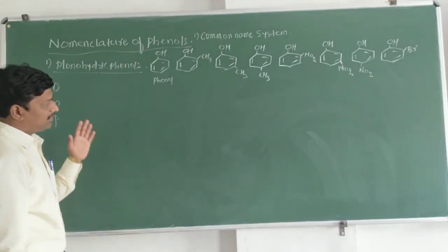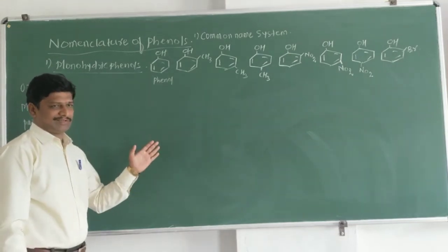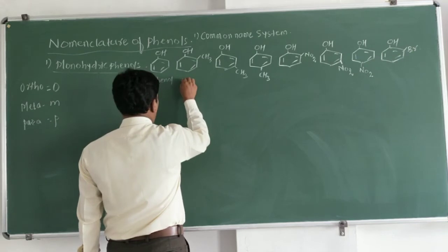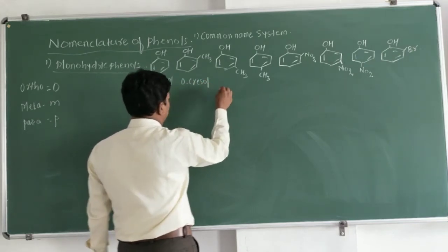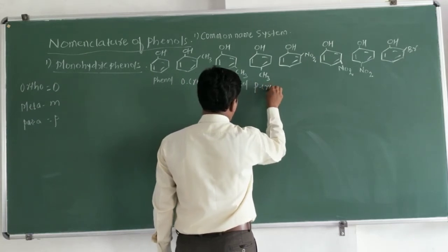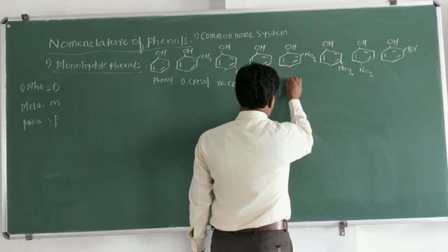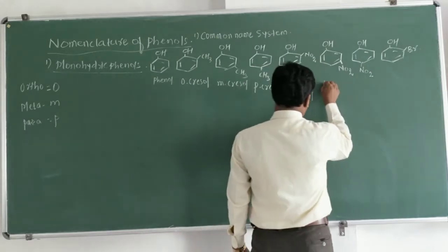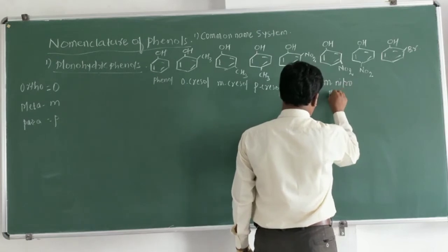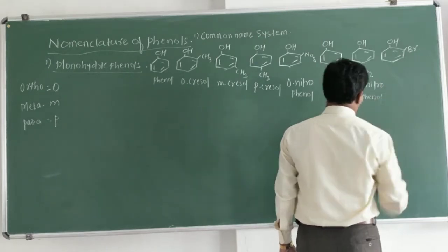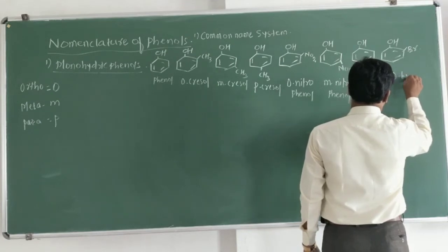Now I will write the common names for all these structures. This structure is known as ortho-cresol, this one is meta-cresol, and this one is para-cresol. Then the next structure is known as ortho-nitrophenol, the next is meta-nitrophenol, then para-nitrophenol, and the last one is ortho-bromophenol.